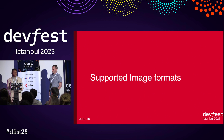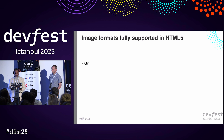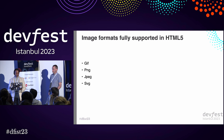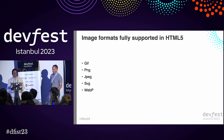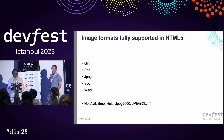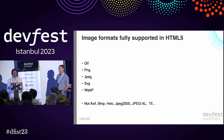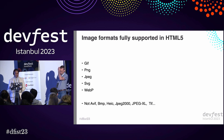Let's take a look at supported image formats. GIF, PNG, JPEG, SVG, and WebP — which is the new kid on the block — are all supported in HTML5. On the other hand, AVIF, BMP, HEIC, JPEG 2000, JPEG XL, and TIFF are not supported in HTML5.